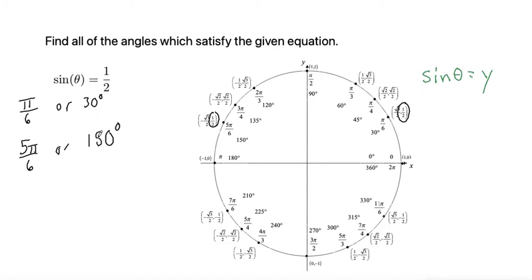But in order to find all of the equations, not just the ones on the unit circle domain, we can take our original answers, our pi over 6.